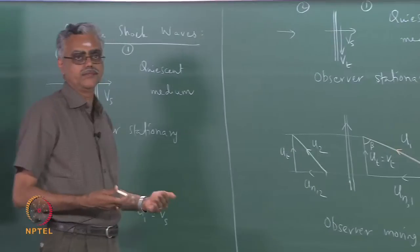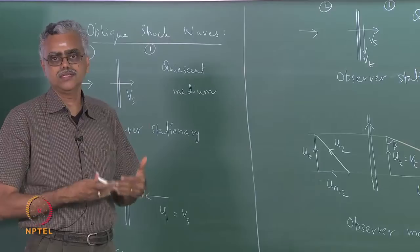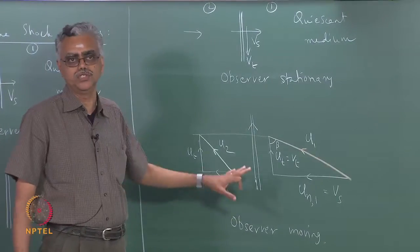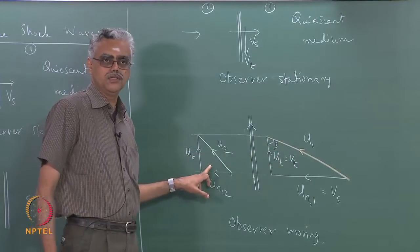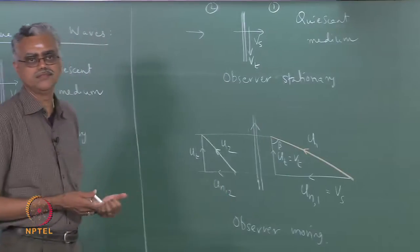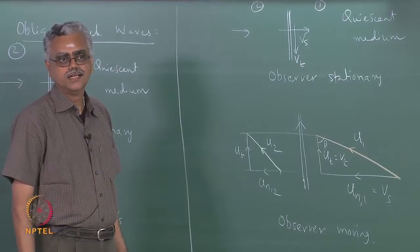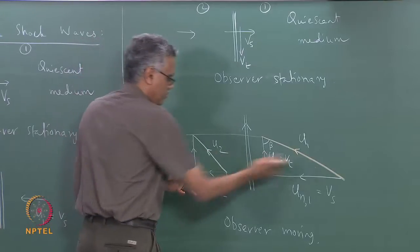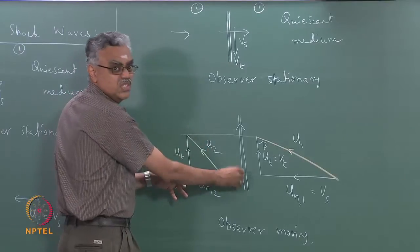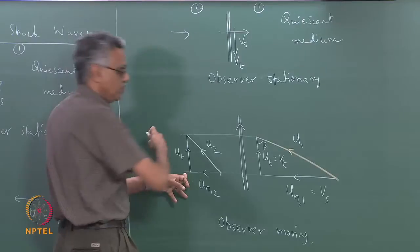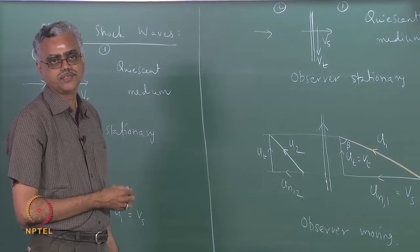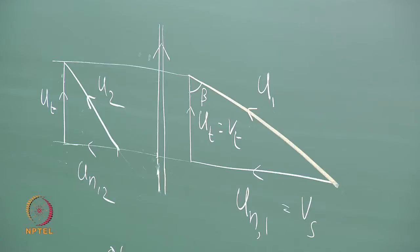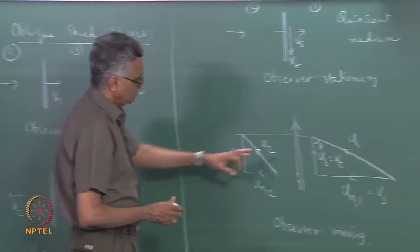We also want to find out whether the flow is deflected after passing through the shock, and by how much. We can see that u2 is smaller than u1 because the normal component is reduced while the tangential component stays the same. The velocity vectors are not parallel. Superimposing u1 and u2, it is clear that the flow is deflected towards the shockwave by a certain angle, called the flow deflection angle.